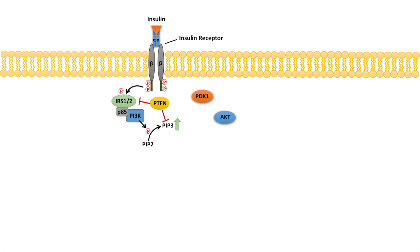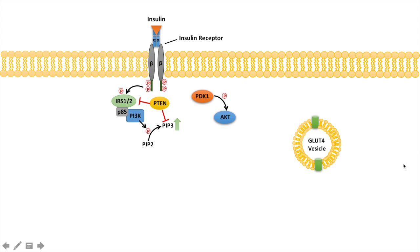PDK1 will become activated and will then phosphorylate AKT. Now, insulin-sensitive cells typically have reservoirs of intracellular vesicles that contain glucose transporters embedded in the vesicle itself. The cell has glucose transporters — specifically GLUT4 — embedded in vesicles inside the cell.